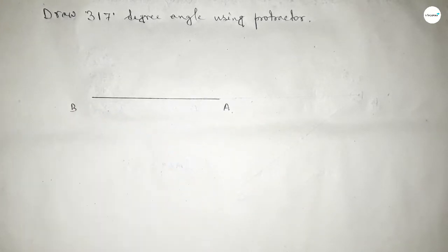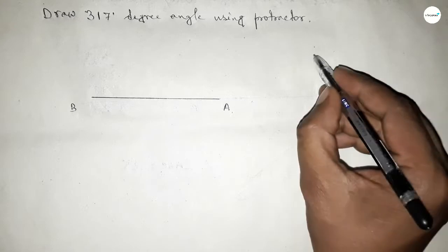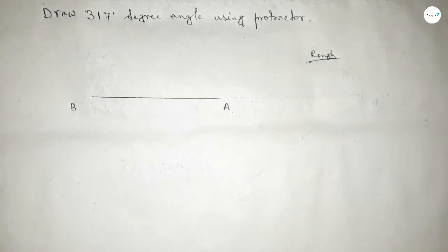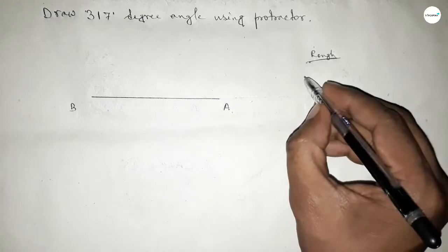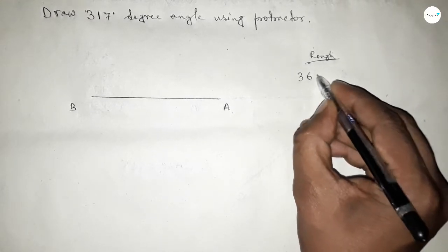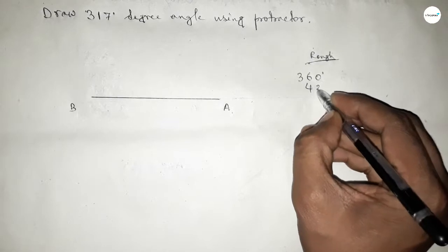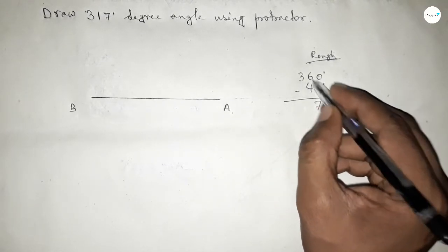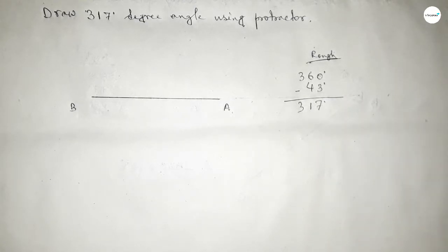Now let's discuss some important calculations. If we subtract 43 degrees from 360 degrees, then we can get 317 degrees. So subtracting 43 from 360, this is 317 degrees.